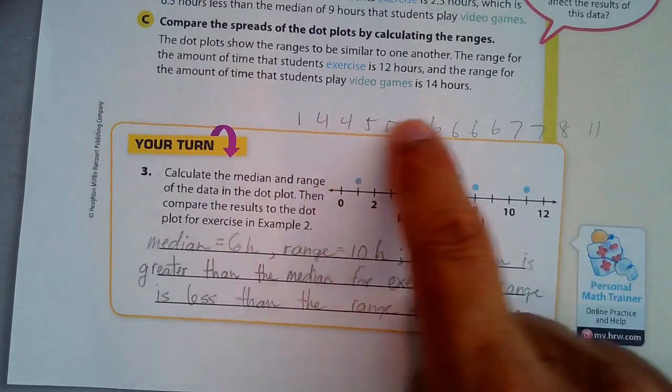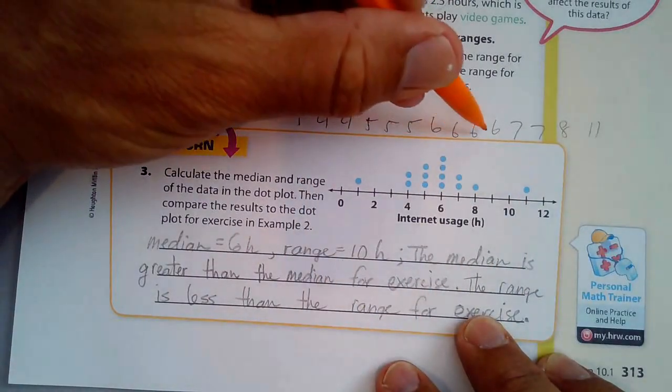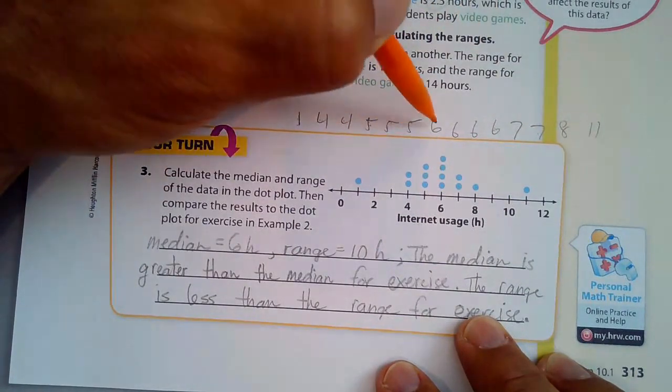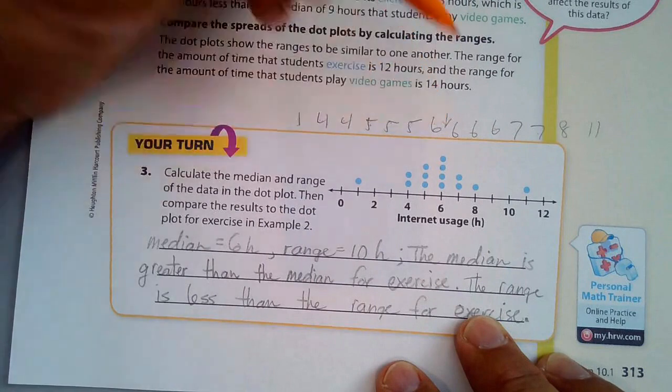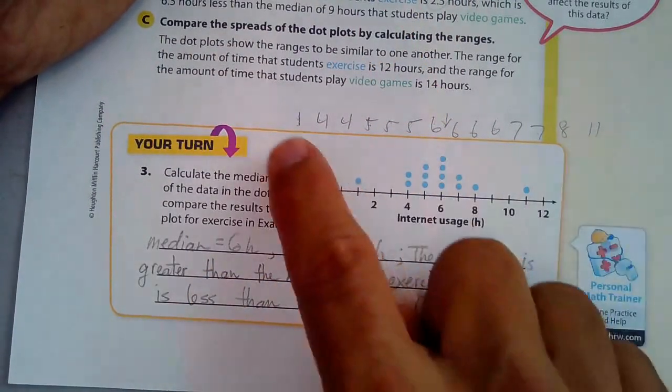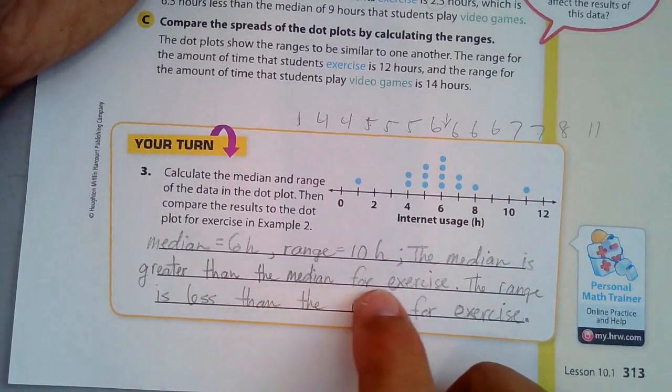And then you have 1, 2, 3, 4, 5, 6, 7, 8, 9, 10, 11, 12, 13, 14. So once again, 1, 2, 3, 4, 5, 6, 7. So it's going to be 6. That's the median is 6 hours and the range is 10 because 11 minus 1 is 10. The median is greater than the median for exercise.